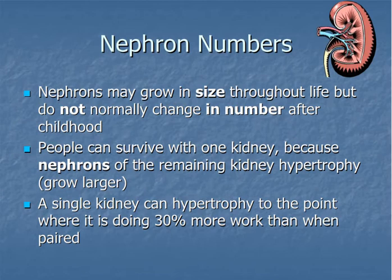Each human kidney has somewhere between 800,000 and 1.2 million nephrons. Nephrons can grow in size throughout life but will not change in number — you're born with all the nephrons you'll ever have. You can survive with only one kidney because the remaining nephrons will hypertrophy, growing larger to take up the work of the missing kidney.